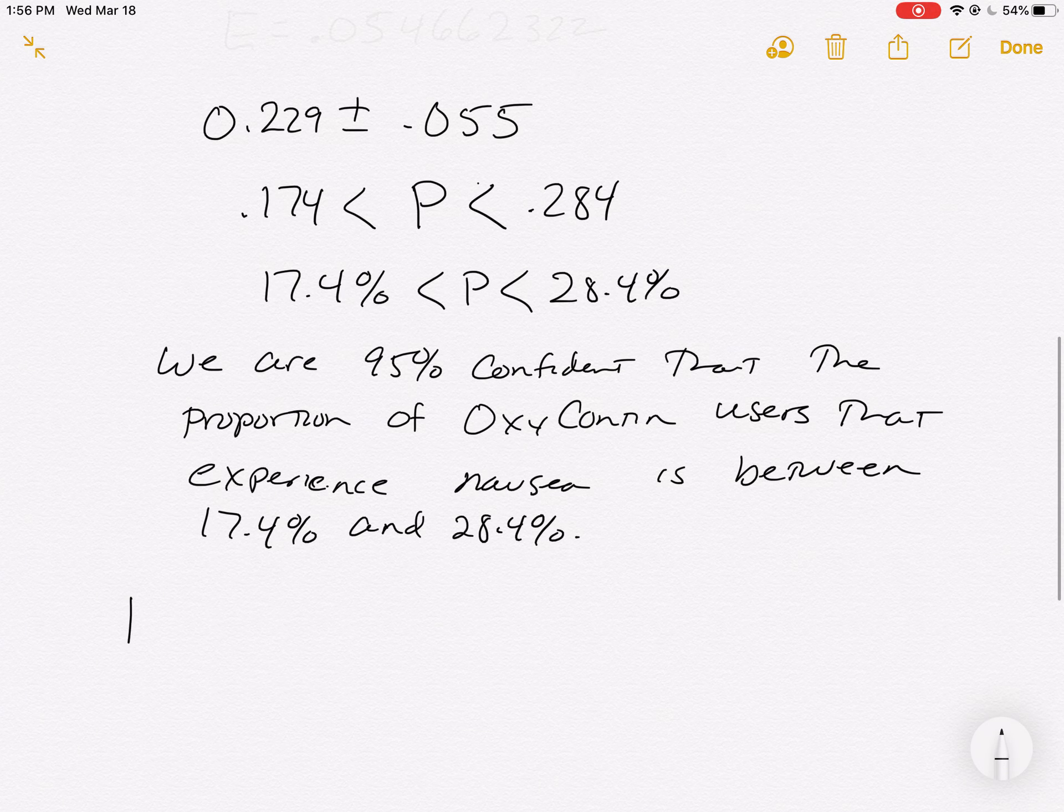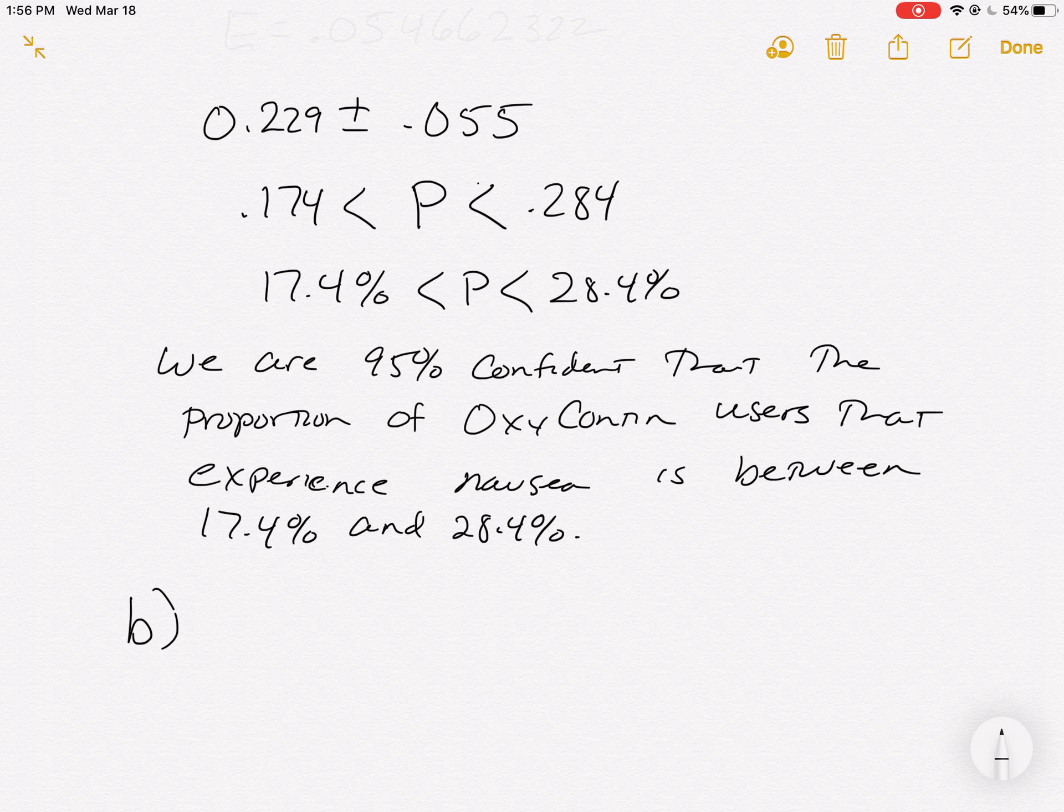If we look at Part B, they like us to compare that to the 45 subjects who were given a placebo. They weren't given any OxyContin, but they thought they were. And their nausea rate was between 1.93% and 20.3%. And they're asking, what do we conclude?